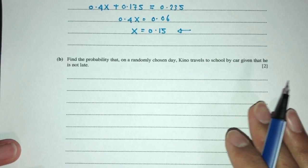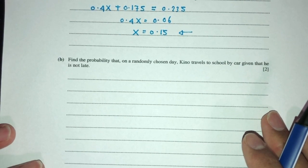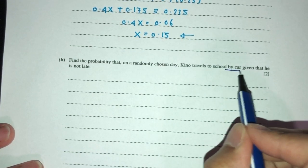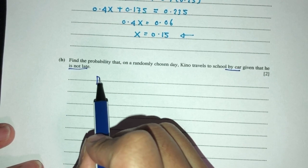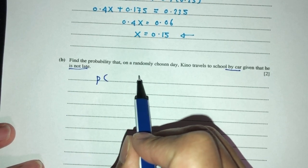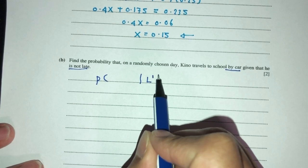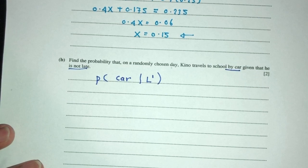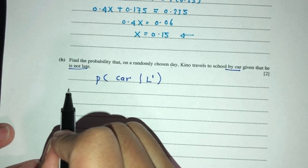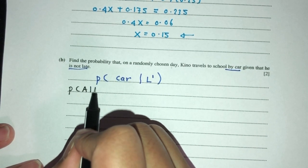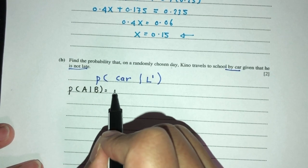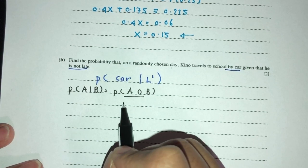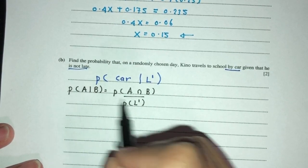Now let's move on to part B. Now we have to find the probability that on a randomly chosen day, Kino travels to school by car given that he is not late. So we have to find, given that, so this is the symbol, given that he is not late, he goes to school by car. So now the formula for this we should know. Again, conditional probability we should know. Whenever you have this in this form, A given B, that should become A and B divided by B.